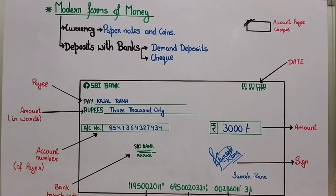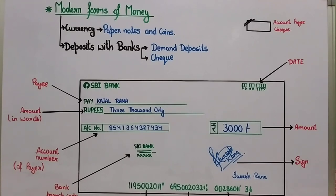Hello kids, welcome back to my channel Concept Improver. Today in this video we are going to continue with Class 10 Economics Chapter 3, that is Money and Credit. This is the second part of this chapter, which I have already uploaded to my channel and is linked in the description box. If you haven't seen that video, you can watch it from there.